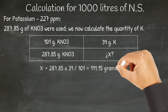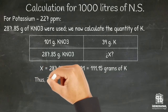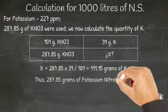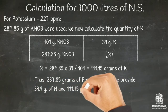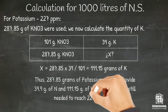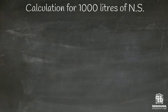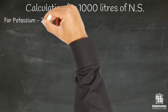287.85 grams of potassium nitrate supply 39.9 grams of nitrogen and 111.15 grams of potassium. We still need 115.85 parts per million of potassium. We now calculate the potassium and phosphorus present in monopotassium phosphate.